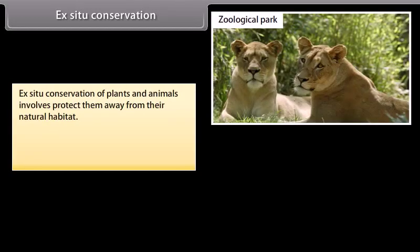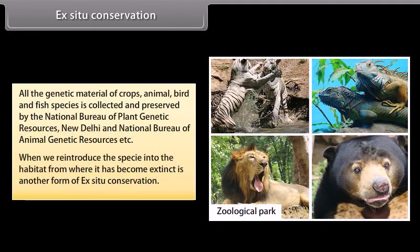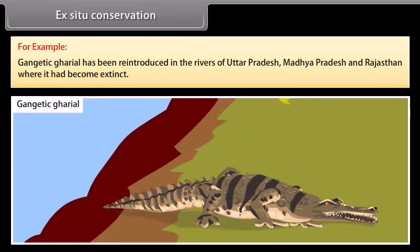Ex-situ conservation of plants and animals involves protecting them away from their natural habitat — for example, zoological parks and botanical gardens. All the genetic material of crops, animal, bird, and fish species is collected and preserved by the National Bureau of Plant Genetic Resources, New Delhi, and the National Bureau of Animal Genetic Resources. Reintroducing a species into the habitat from where it has become extinct is another form of ex-situ conservation. For example, the Gangetic gharial has been reintroduced in the rivers of Uttar Pradesh, Madhya Pradesh, and Rajasthan, where it had become extinct.